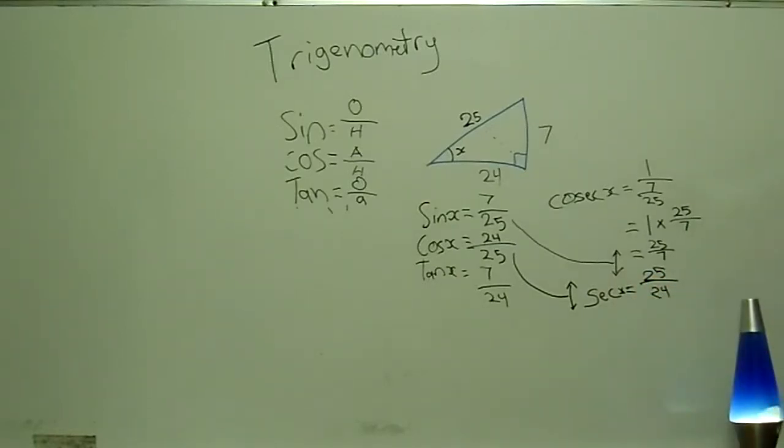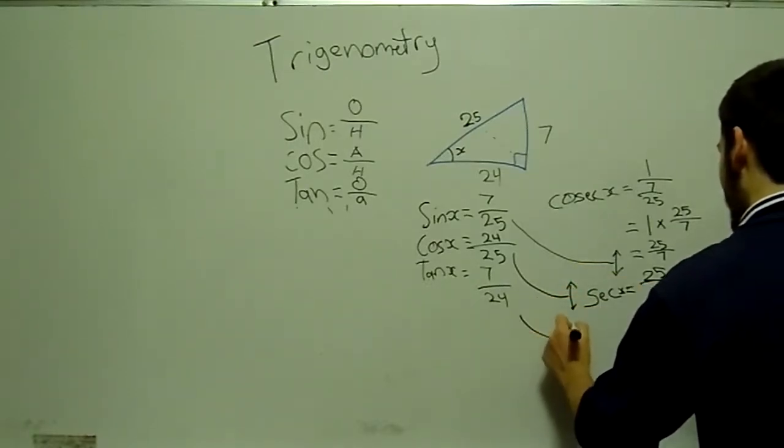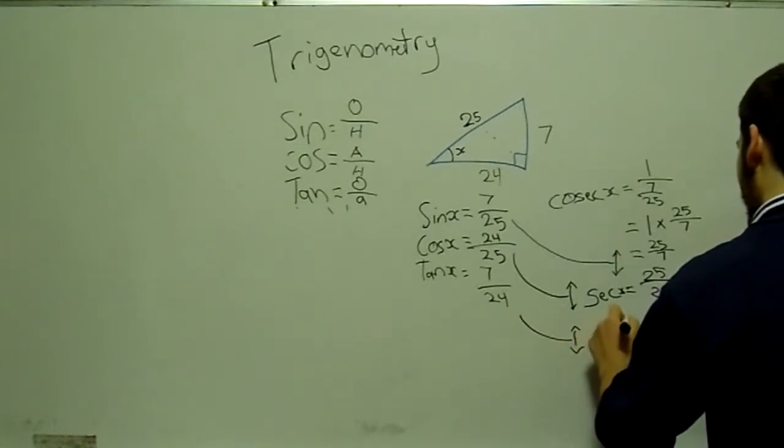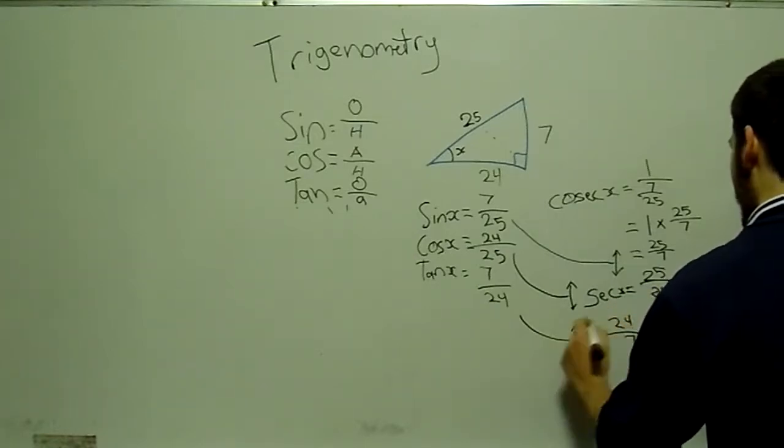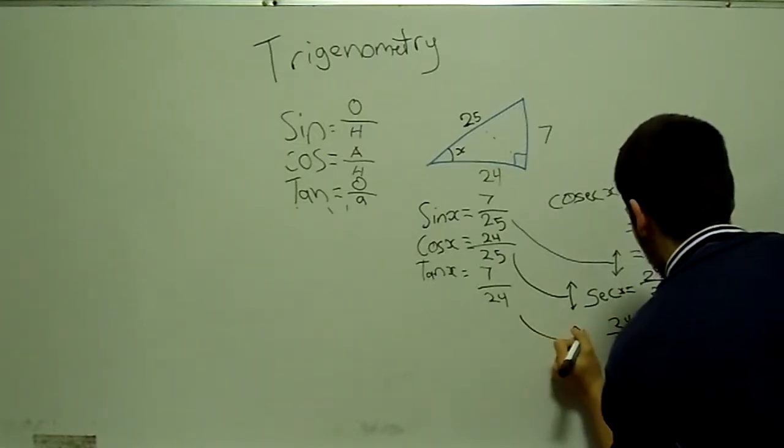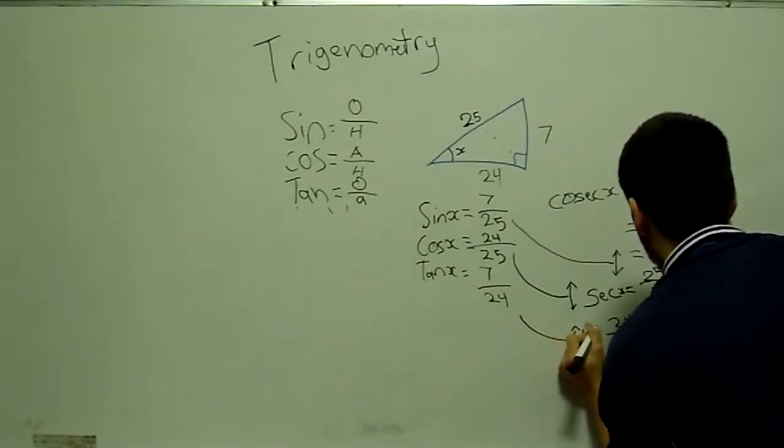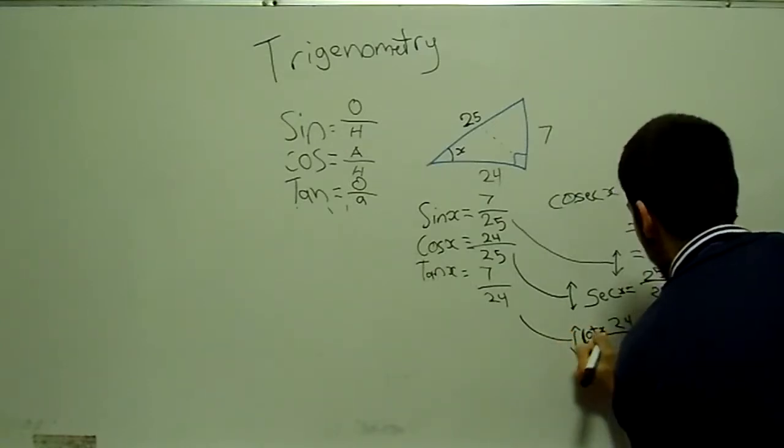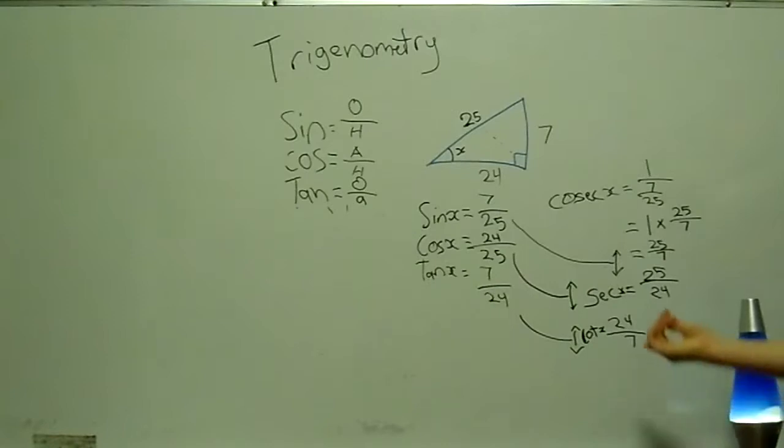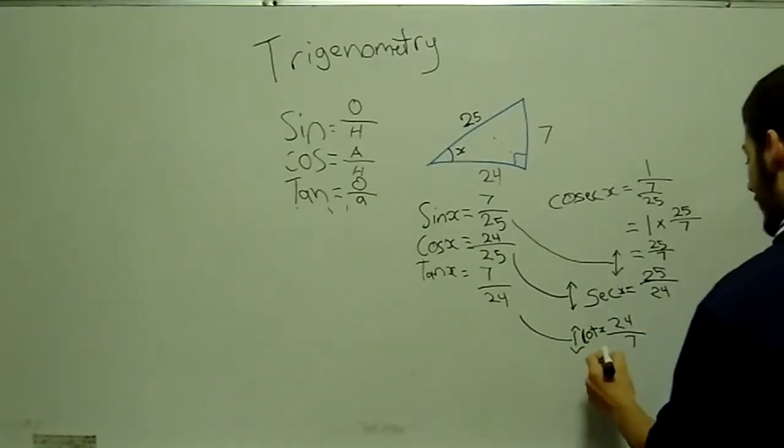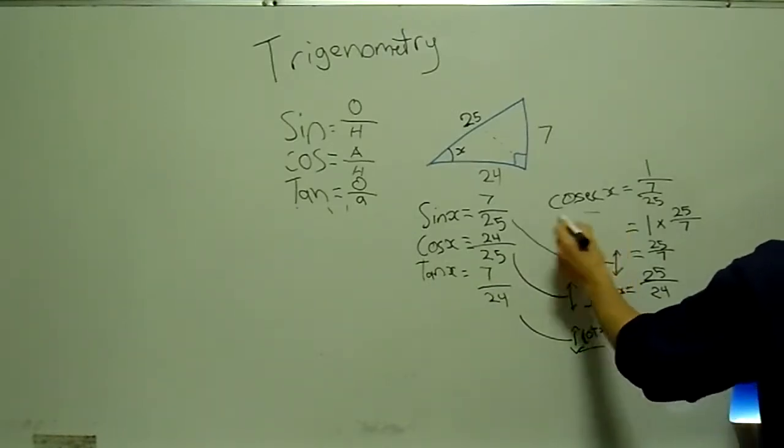Now tan, tan's pretty simple, follows the same rule. It's just a reciprocal of 7 over 24, bring that round, flip it. That way we get 24 over 7, and that's going to be called cot. So think of that as like a children's bed, so it's like cot. So you've got cot here, you've got sec, then you've got cosec.